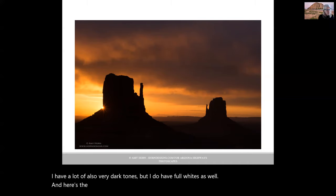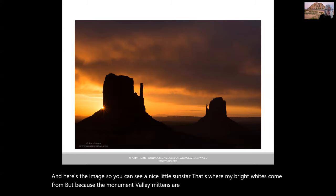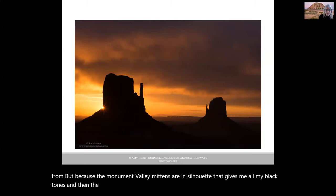And here's the image. You can see a nice little sun star. That's where my bright whites come from. But because the Monument Valley Mittens are in silhouette, that gives me all my black tones. And then the dark, moody sky adds to that.